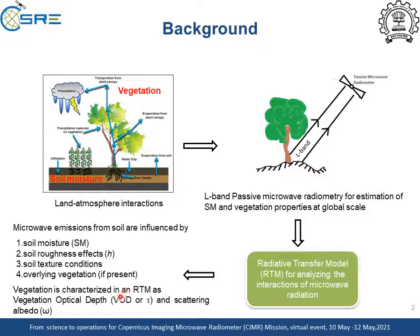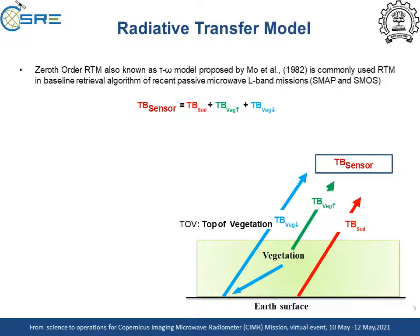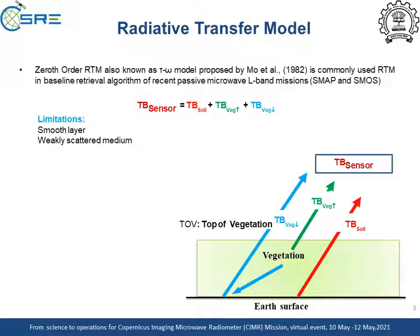The vegetation in an RTM is characterized by vegetation optical depth and scattering albedo. The zeroth order or tau-omega model is the most commonly used RTM in baseline retrieval algorithms. This model assumes vegetation to be a smooth layer and weakly scattering medium, which limits its application to dense vegetated regions where multiple scattering effect is predominant.